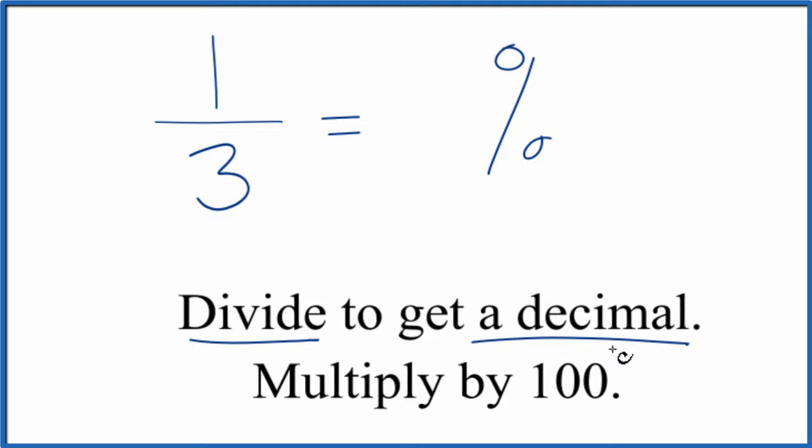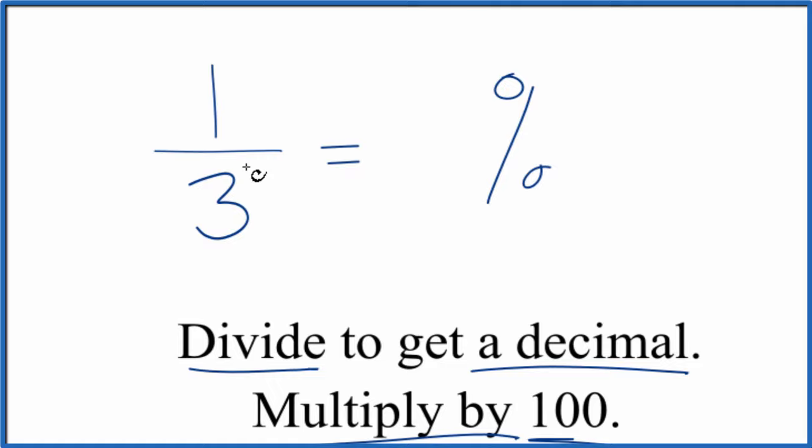The way we do that, we divide one by three. That gives us a decimal. And we take that decimal and multiply it by 100. That'll give us the percentage for one-third.